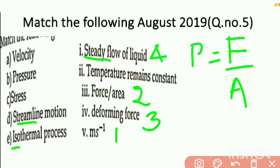Isothermal. Iso means same, thermal means temperature. So temperature remains same, that means temperature remains constant. Therefore our answer will be the fifth one, temperature remains constant.